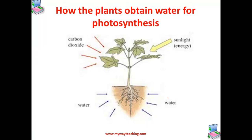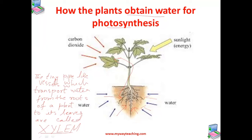Now let us understand how plants obtain water from the soil for photosynthesis. The roots of the plant absorb water from the soil, and this water is transported to the leaves through vessels which run like interconnected pipes throughout the roots, stems, and branches. These tiny pipe-like vessels that transport water from the roots to the leaves are called xylem.